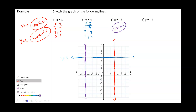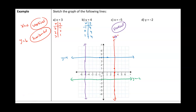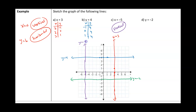Let's look at y = -2: find y = -2 on the graph and notice there's a horizontal marker, so y = -2 is a horizontal line. We can also label the other lines: x = 3 is a vertical line, x = -5 is a vertical line (the purple one). To summarize: x equals any number is a vertical line, and y equals any number is a horizontal line.